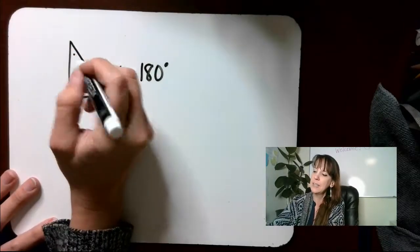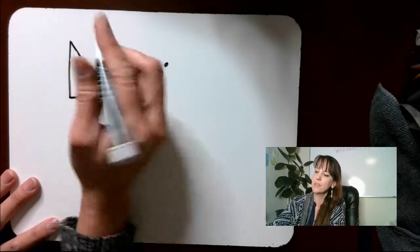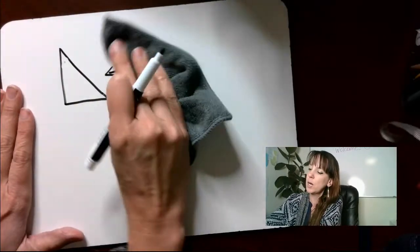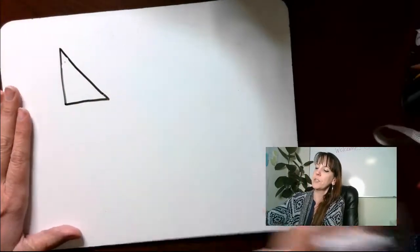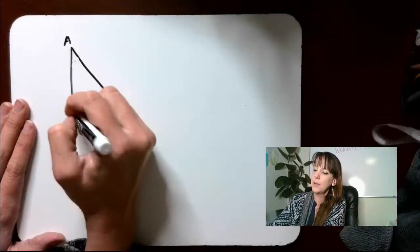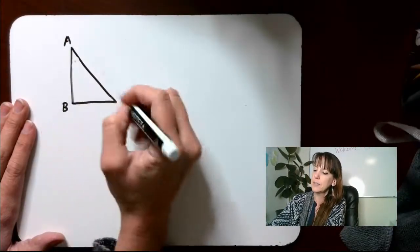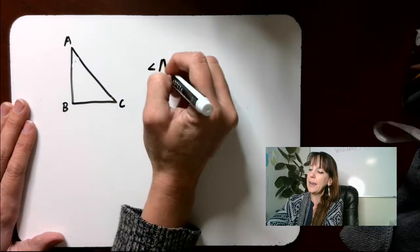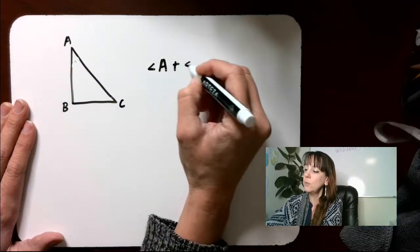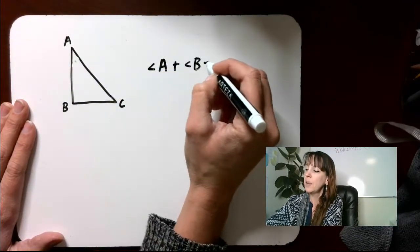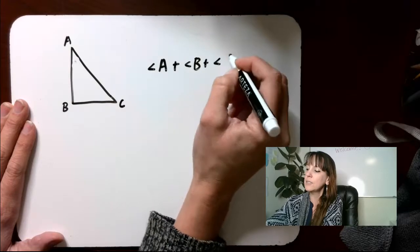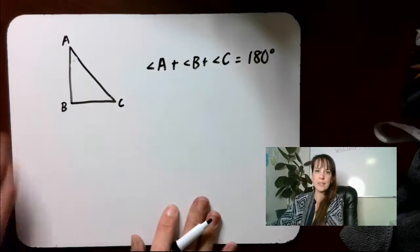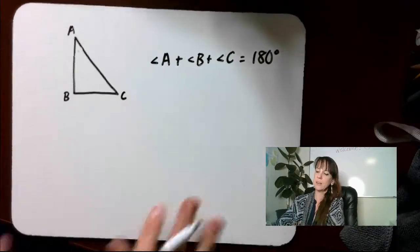That means — you should write it out the proper way. We're gonna call this triangle A, B, C. Angle A plus angle B plus angle C will all give us 180 degrees.